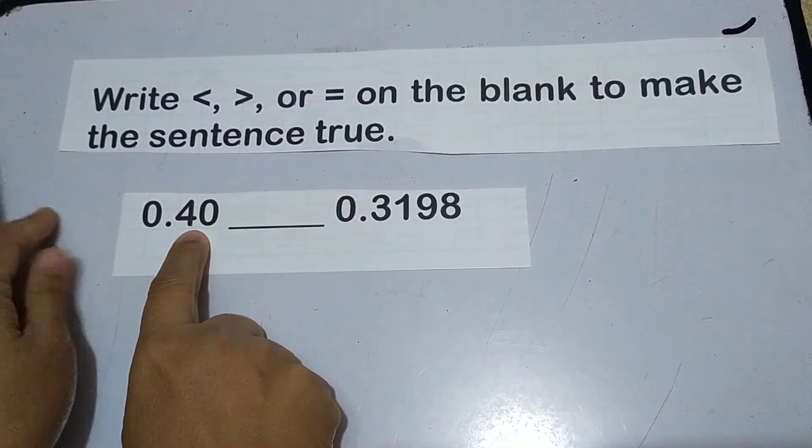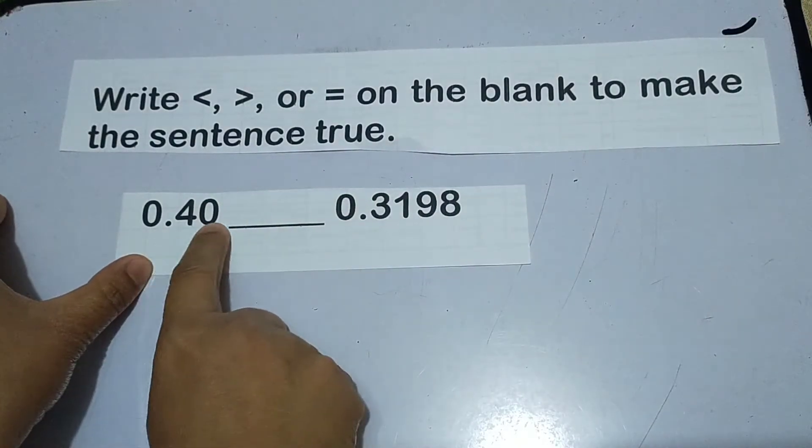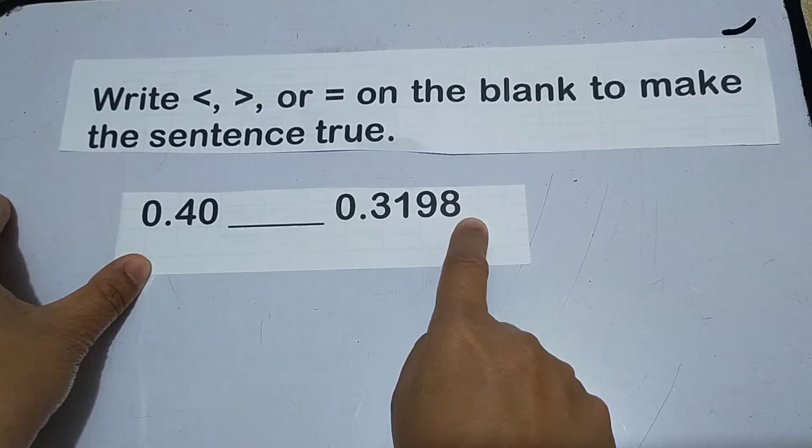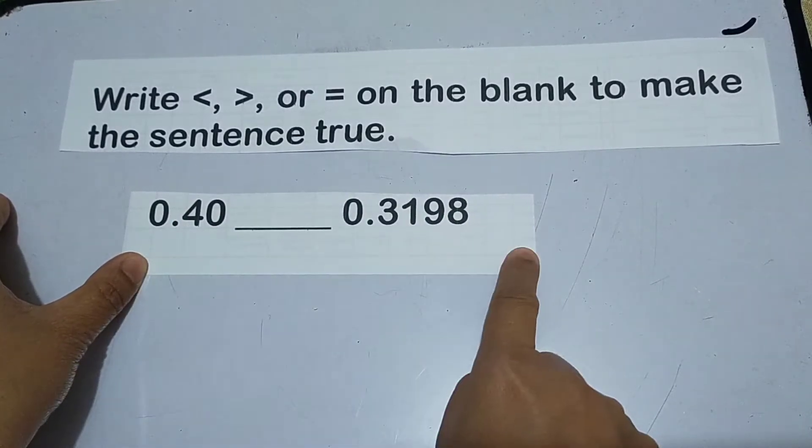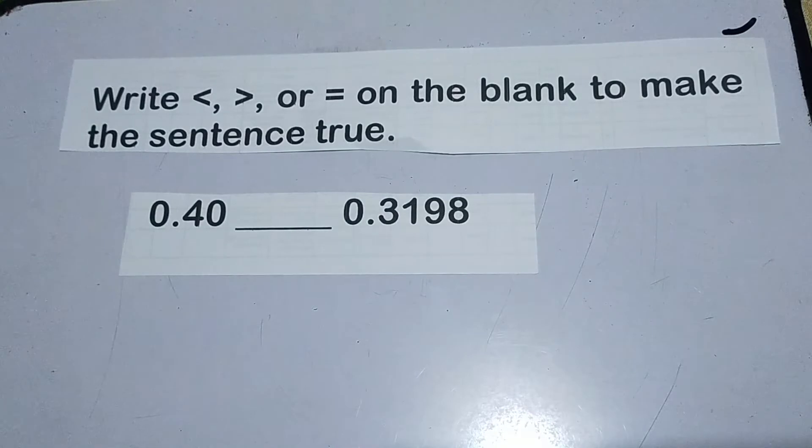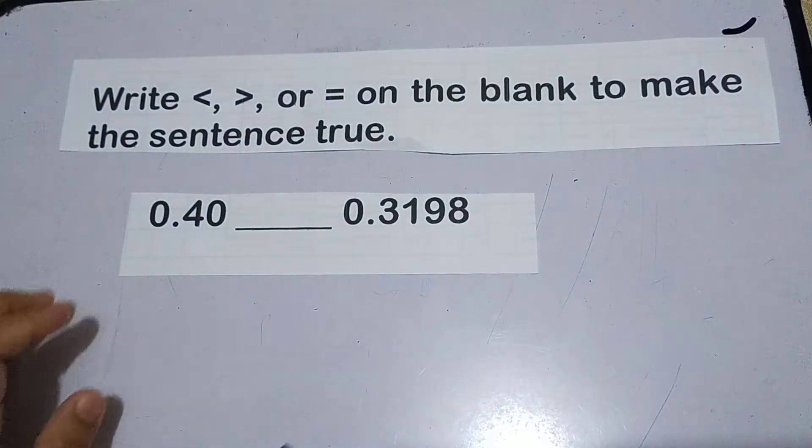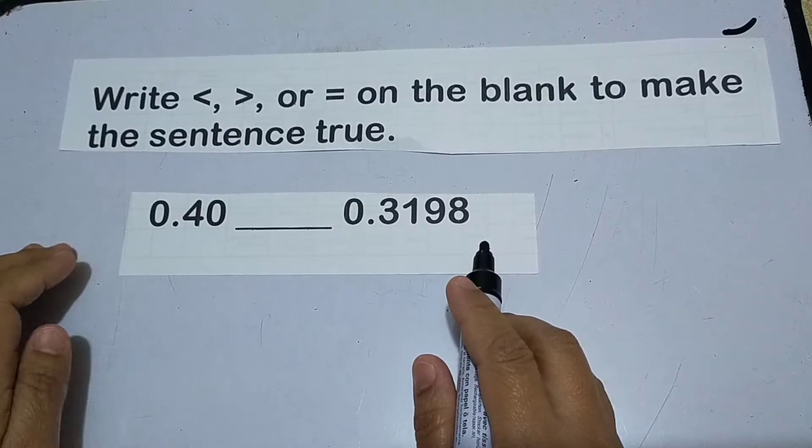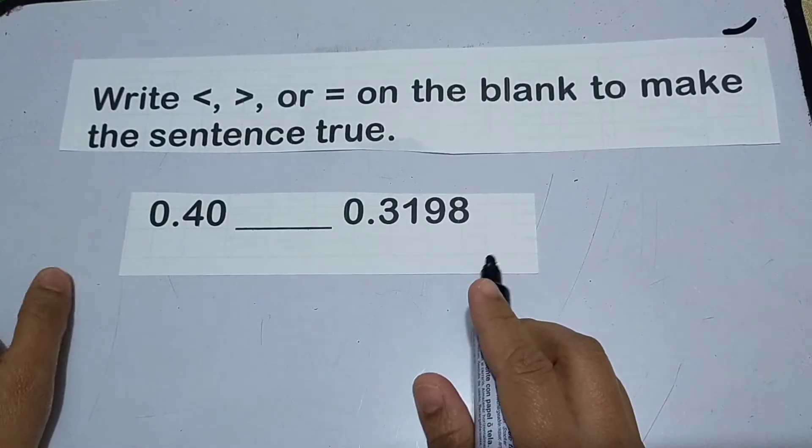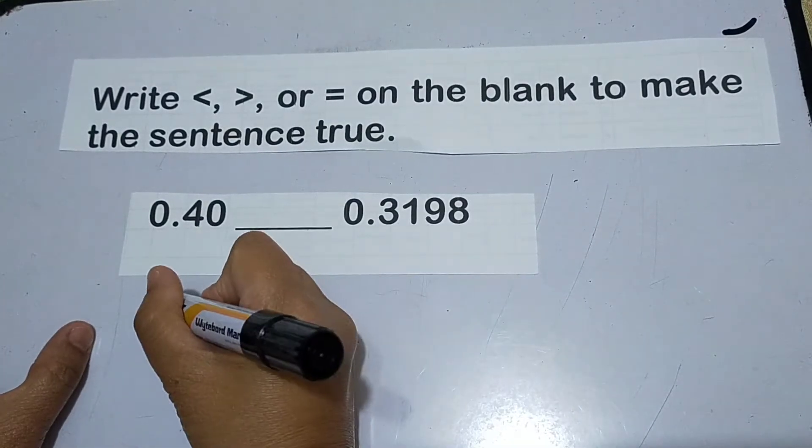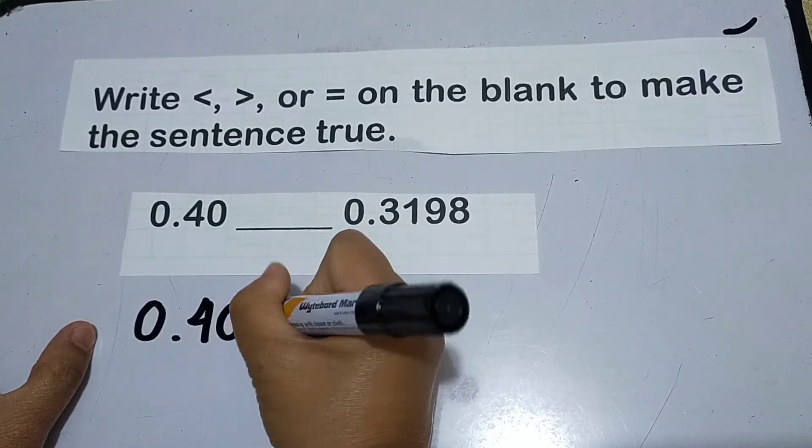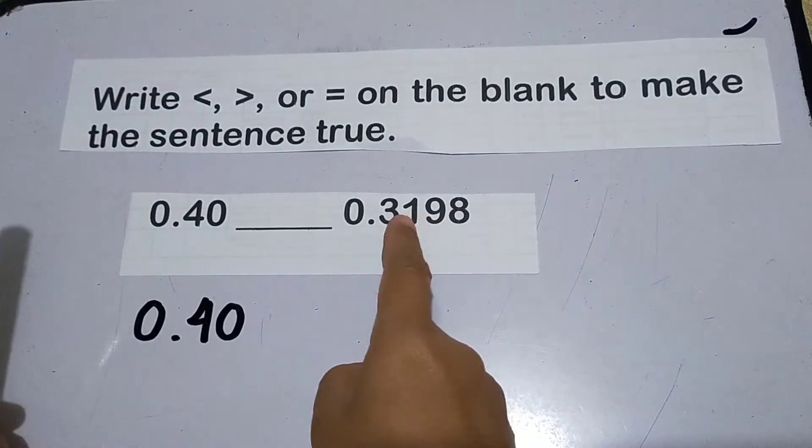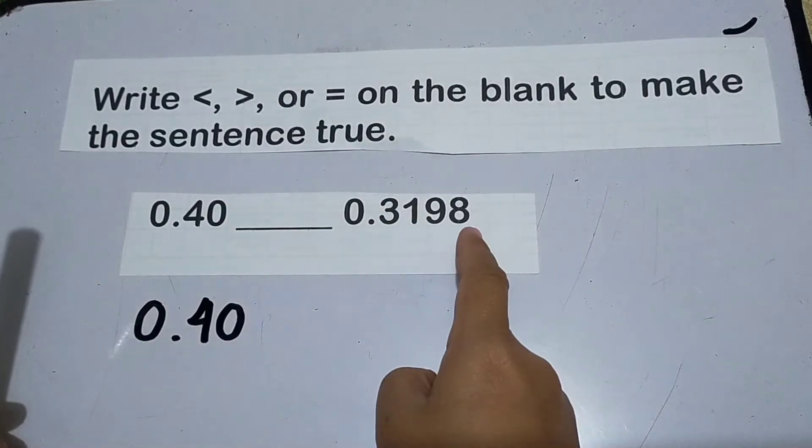hindi equal yung bilang ng ating digits sa decimal number na given natin. The digits to the right of the decimal point, dalawa lang. Habang ito naman ay apat. So mahirap mag-compare kapag yung bilang ng digits natin ay magkaiba. Ilang digits meron to? Apat, diba?